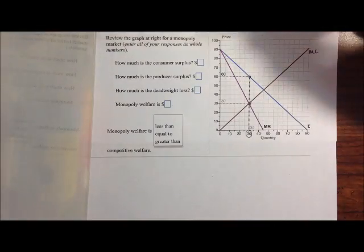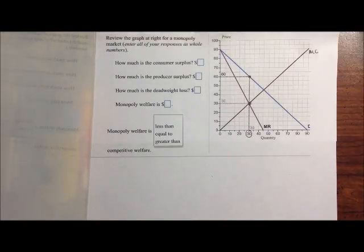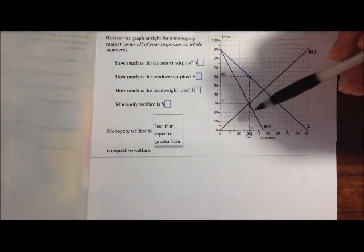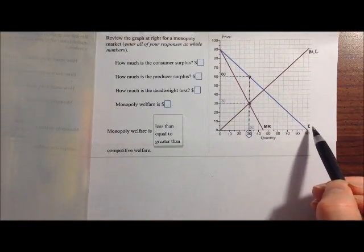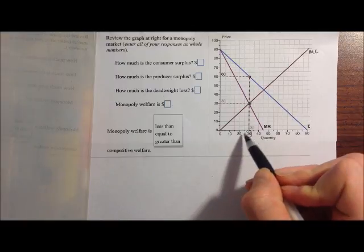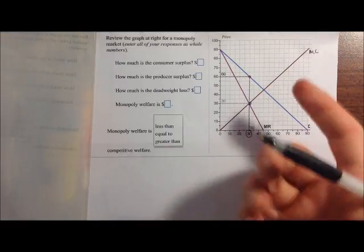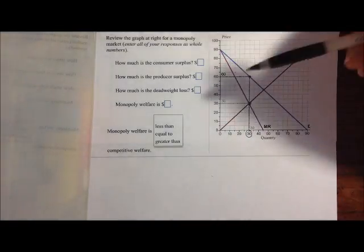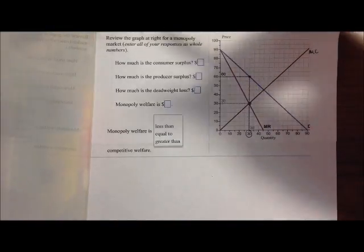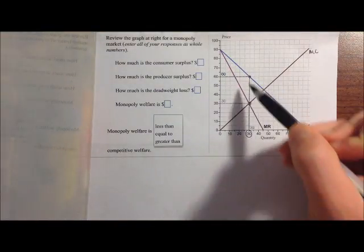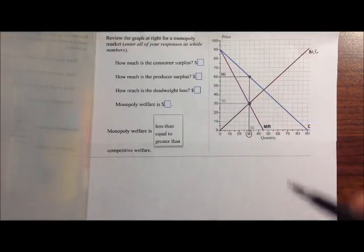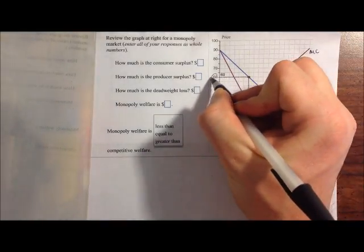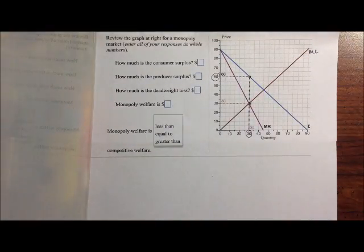And in order to figure out then what price this monopoly is going to charge, we go to our demand curve. The demand curve always tells us for any quantity that might be sold or bought, what price are consumers willing to pay for it. And so at a quantity of 30, the demand curve is telling us consumers are willing to pay a price of 60. And so being a profit maximizing firm, that's the price that our monopolist will set, which is 60.